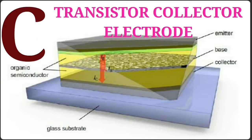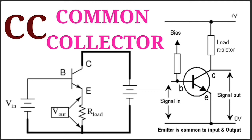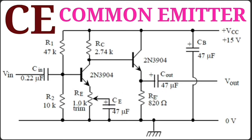C – Transistor Collector Electrode. CB – Common Base Configuration. CC – Common Collector. CE – Common Emitter.